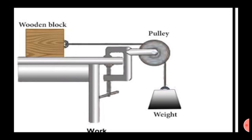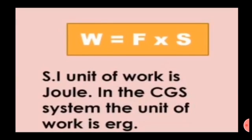Work done depends on force and displacement. The formula expressing this relationship is: Work done by the force = Force applied to the body × displacement of the body in the direction of force. In the SI system, the unit of work is Joule (J), the unit of force is Newton (N), and the unit of displacement is meter (m). In the CGS system, the unit of work is Erg. If a force of 1 N parallel to the surface is applied to a wooden block and the block is displaced by 1 meter, then the force has done 1 Joule of work — the displacement is in the direction of the force.